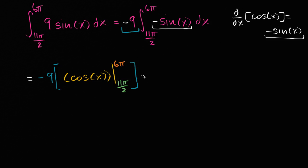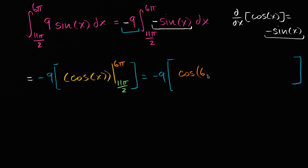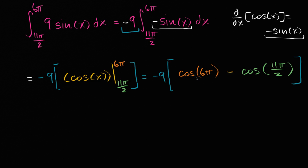This is equal to negative nine times cos(6π) minus cos(11π/2). What is cos(6π)? Cosine of any multiple of 2π is equal to one — you can view 6π as going around the unit circle three times, the same as cos(2π) or cos(0). So that equals one.